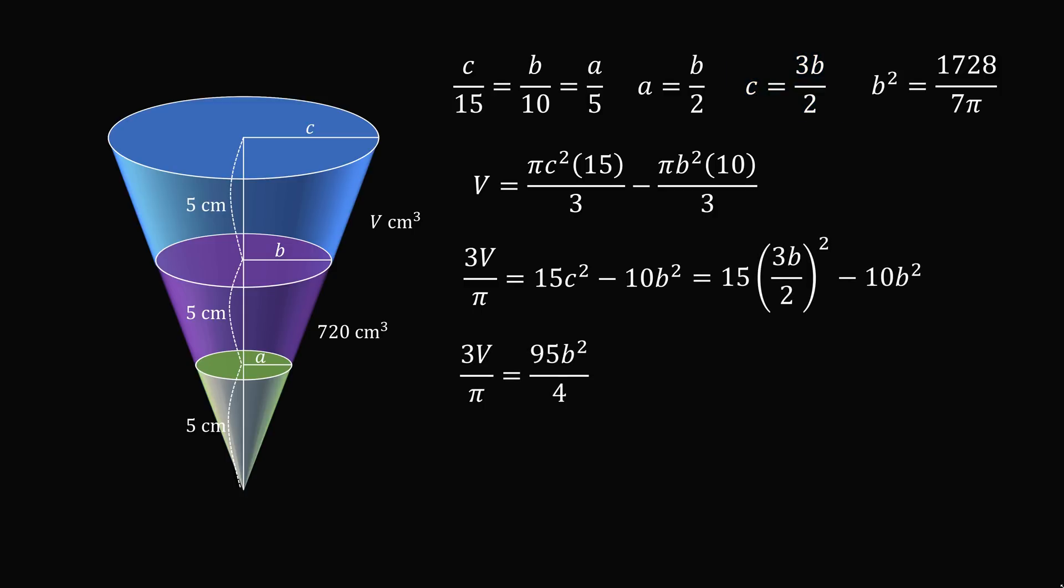And we will solve V is equal to 95 pi B squared over 12. But we've solved that B squared is equal to 1728 divided by 7 pi. So we substitute in, and we get that V is equal to 13680 divided by 7, which is approximately equal to 1,954.29 cubic centimeters.